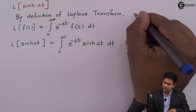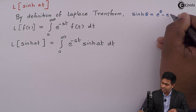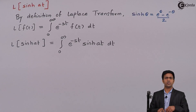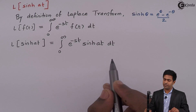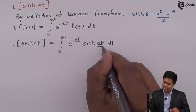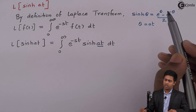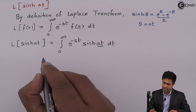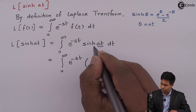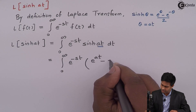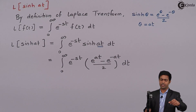The formula for hyperbolic sine is: sinh(θ) equals e raised to θ minus e raised to minus θ, all upon 2. Comparing sinh(at) with sinh(θ), we get θ equals at. Substituting θ as at, we get the integral from 0 to infinity of e raised to minus st times the quantity (e raised to at minus e raised to minus at) upon 2, with respect to t.